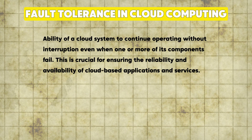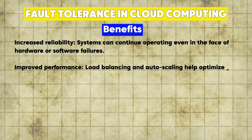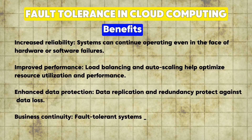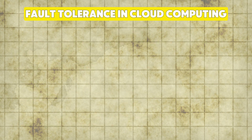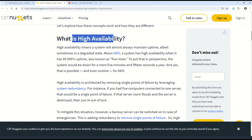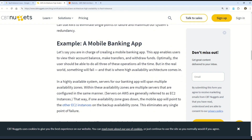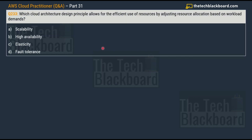Fault tolerance in cloud computing is the ability of the system to continue operating without interruption even if one or more components fail. This is a critical ability to ensure reliability and availability of cloud-based applications and services. The key benefits of fault tolerance include: increased reliability, improved performance, enhanced data protection, and — probably the biggest one — business continuity. I also encourage you to understand high availability, since both concepts are very related, and AWS documentation has a great example using a mobile banking application.